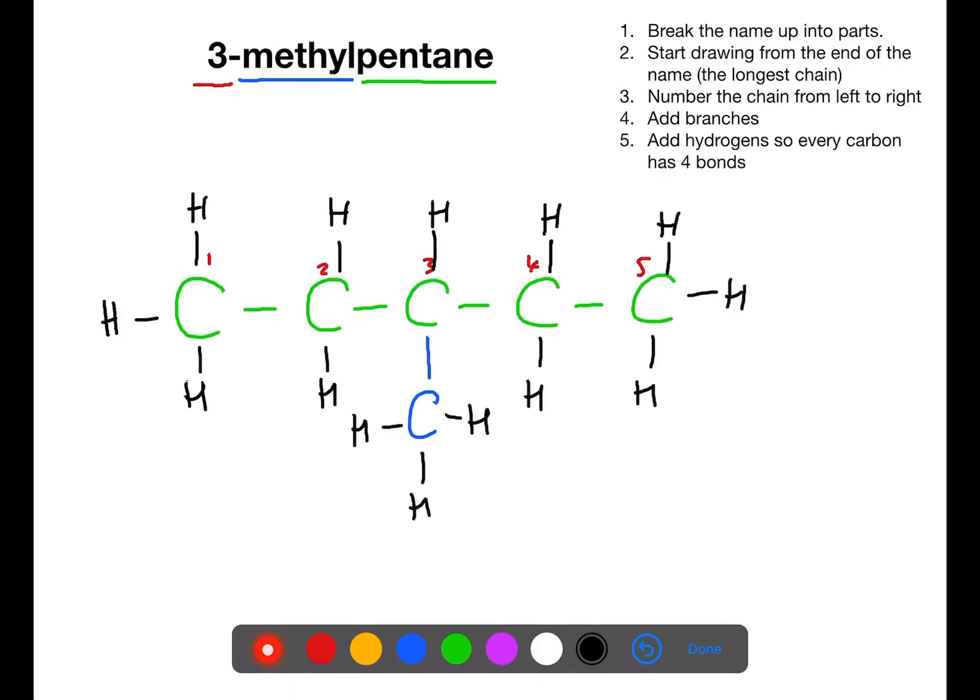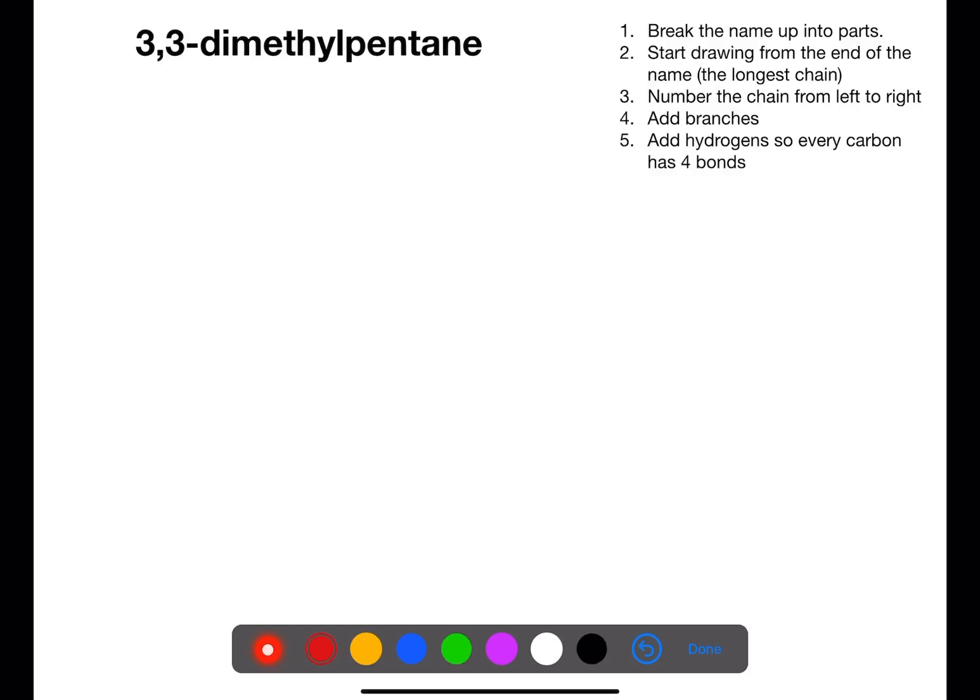Let's try another example. This time we have two numbers. We then have dimethyl for branches, and again we have pentane. We're going to draw five carbons in a row and then number them from left to right.